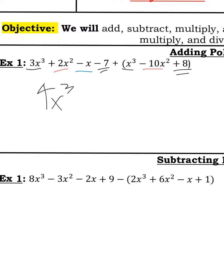And then I have 2x squared minus 10x squared, so that'll be negative 8x squared. And negative x plus, there's nothing else over there, so minus x. And then you had negative 7 plus a positive 8, so that's just going to be a positive 1.